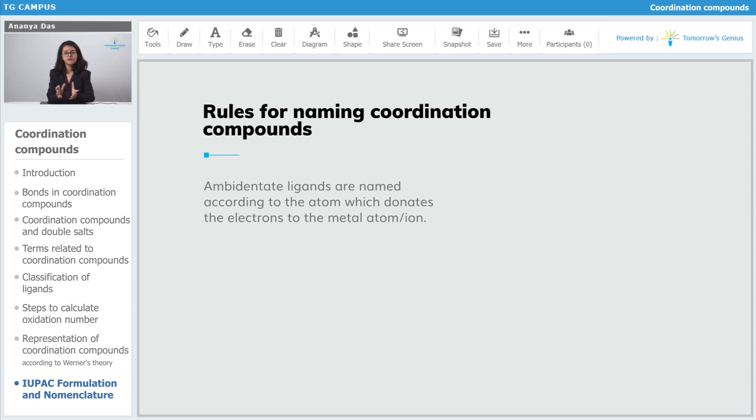How do you know if in a complex ambidentate ligand is present? How do you know which atom is donating to the metal? You will be able to know which atom is donating to the metal by looking at the complex, that is the formula of the complex.